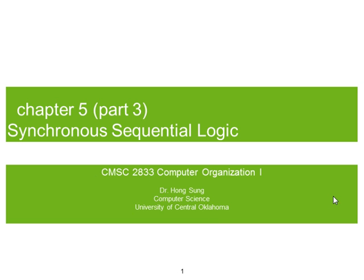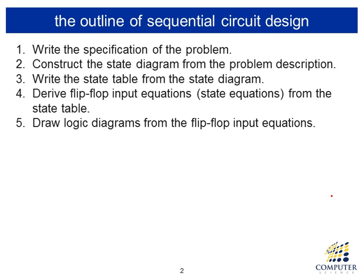This is the third part of Chapter 5. Here we are going to study how to design sequential circuits. Sequential circuit design goes through several complicated steps. The first step is writing the specification of the problem, also called the problem description. From the problem description we construct the state diagram, then from the state diagram we write the state table, and from the state table we derive state equations, also called flip-flop input equations.